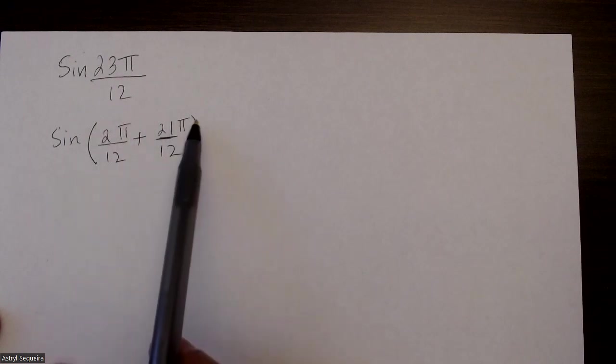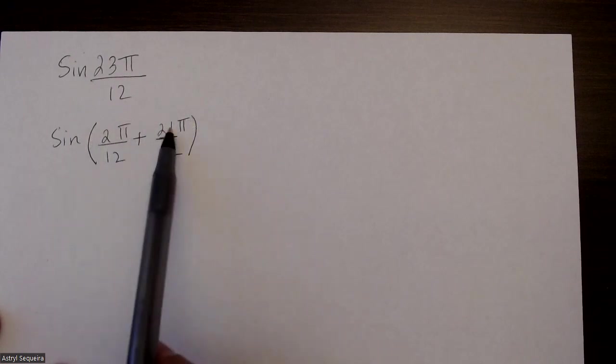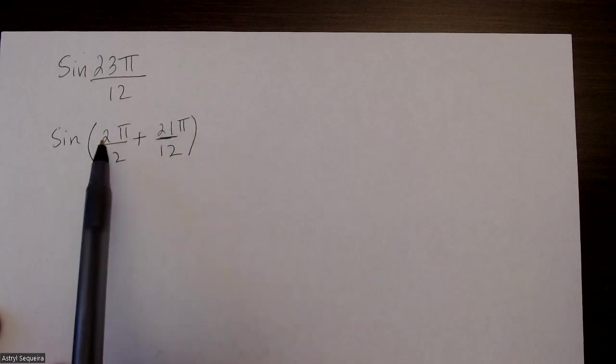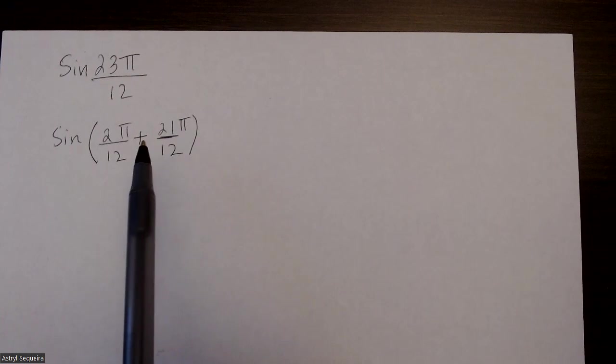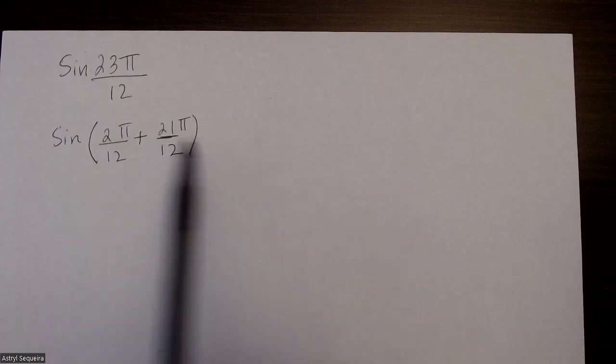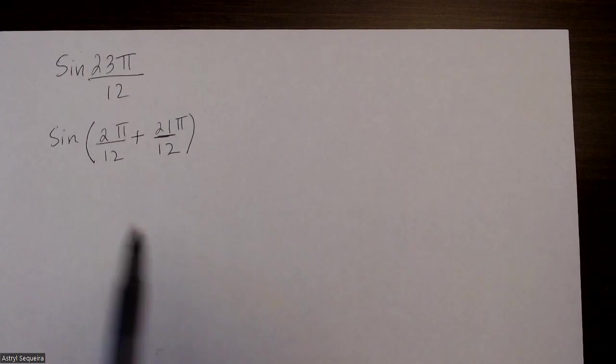Now there's a lot of correct solutions. There's many different solutions. You don't have to pick 2 and 21, you could have picked 3 and 20, for example. That would work as well. Just pick any one and continue with the same steps.